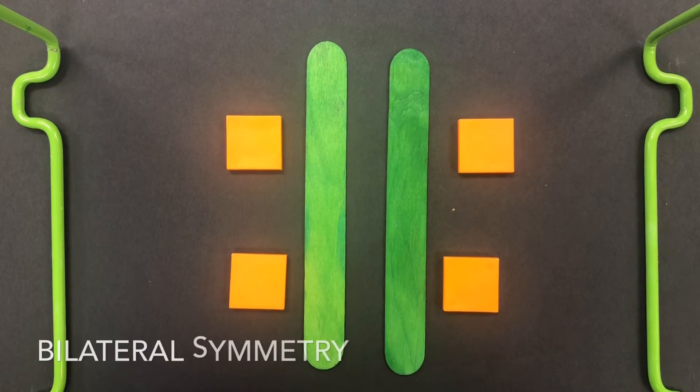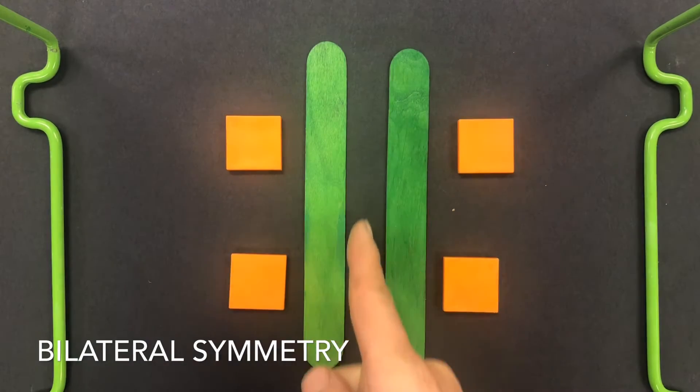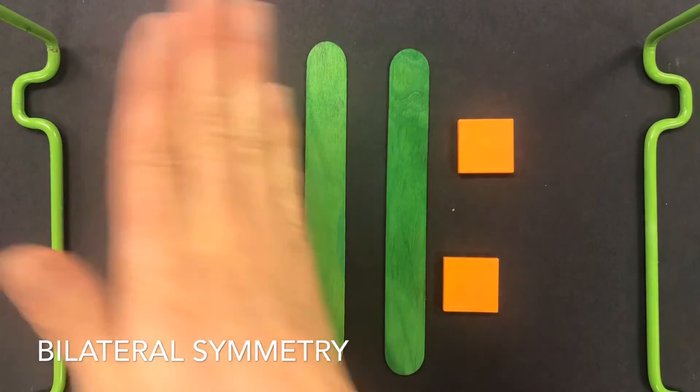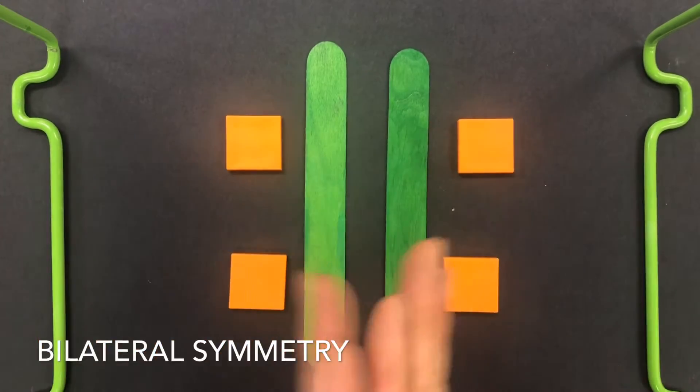This is an example of bilateral symmetry, a formal symmetrical example. It's as though I have a center line, an imaginary line, and this side is exactly the same as that side. It's also thought of as a mirror image.